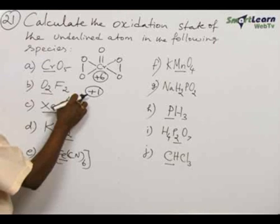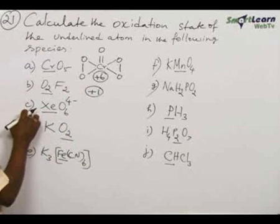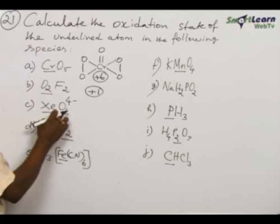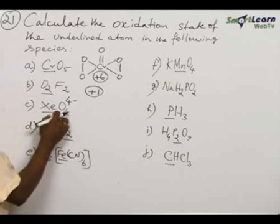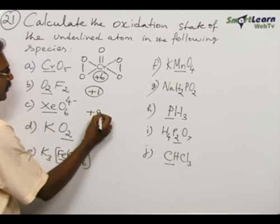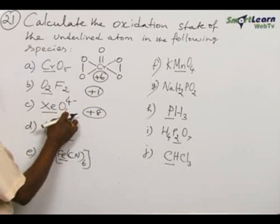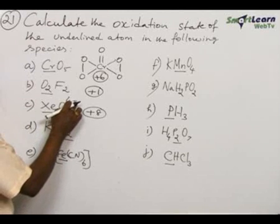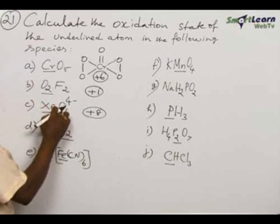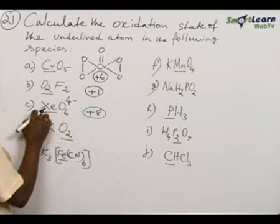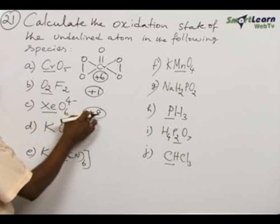This is one of the compounds in which oxygen atoms exhibit a positive oxidation state. Now see XeO₆⁴⁻ — this is the perxenate ion, and here xenon exhibits plus 8 oxidation state. There are 6 oxygen atoms, so minus 2 times 6 gives minus 12. The net charge is minus 4, so: Xe plus (minus 12) = minus 4. Therefore Xe must be plus 8.